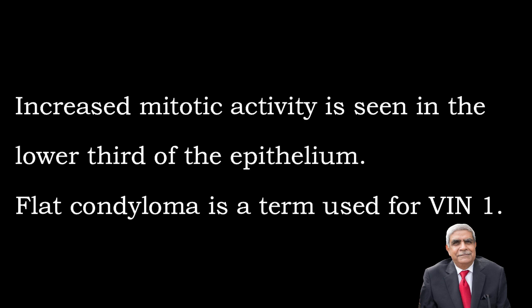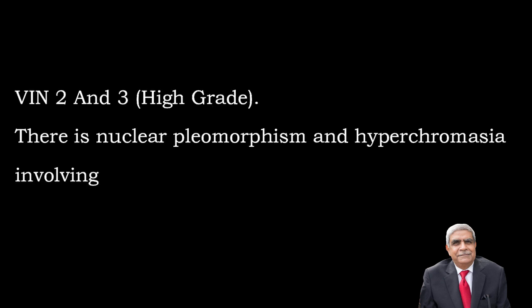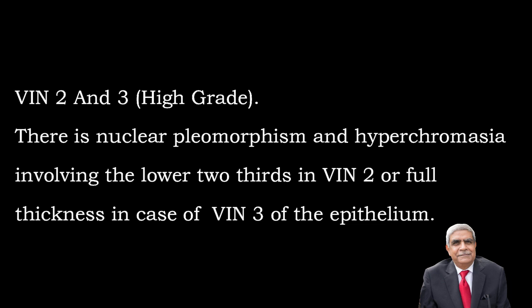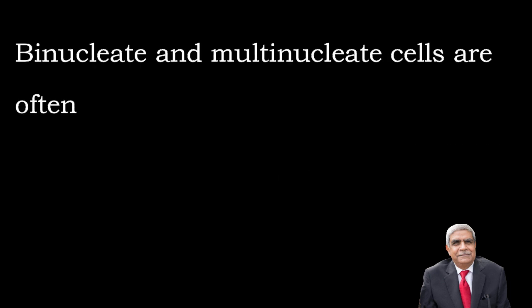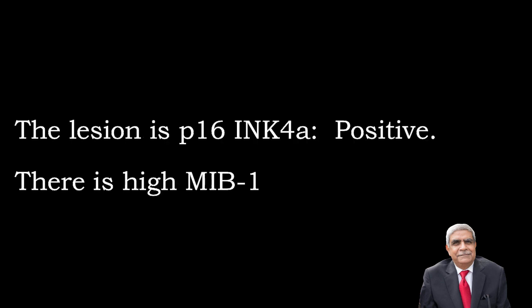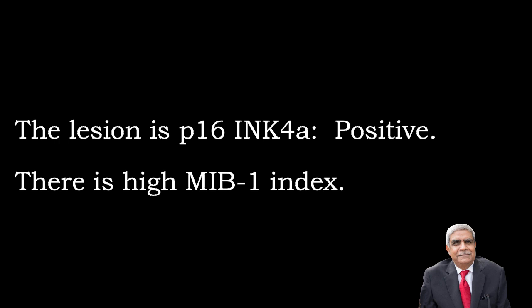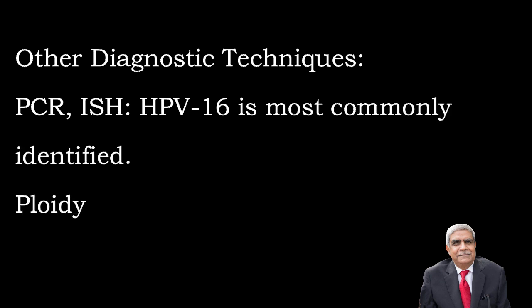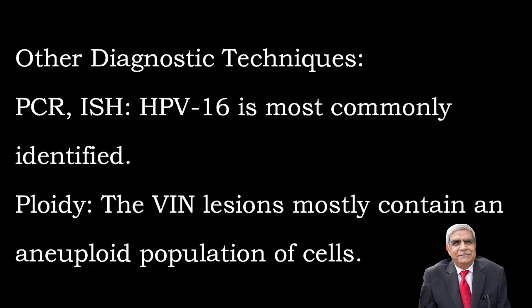Flat condyloma is the term used for VIN 1. VIN 2 and VIN 3 are high grade. Nuclear pleomorphism and hyperchromasia involves the lower two-thirds in VIN 2 and full thickness in VIN 3. Binucleate and multinucleate cells are often seen; atypical mitotic figures are also present. Koilocytes are present within or adjacent to the lesion. Immunohistochemistry: the lesion is p16 INK4a positive with high MIB-1 index.